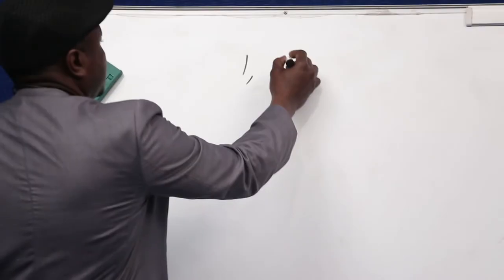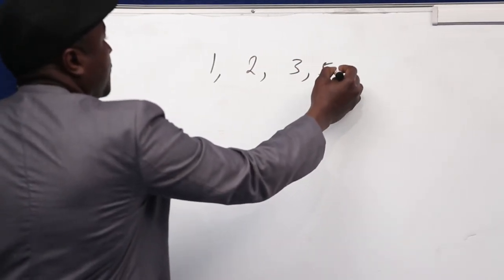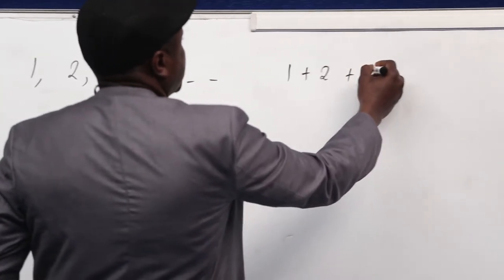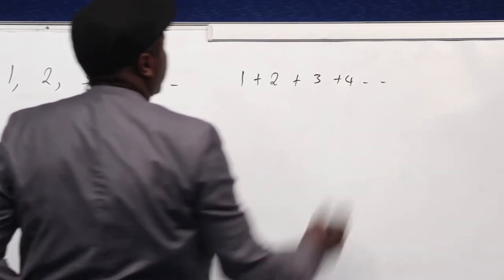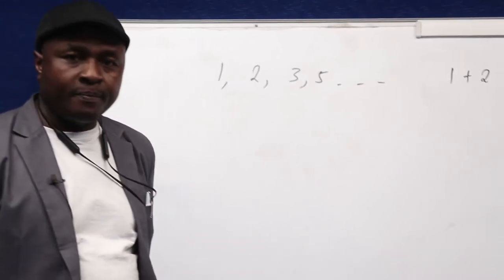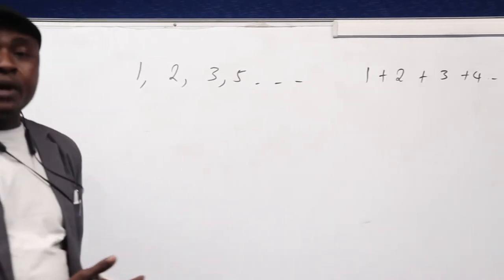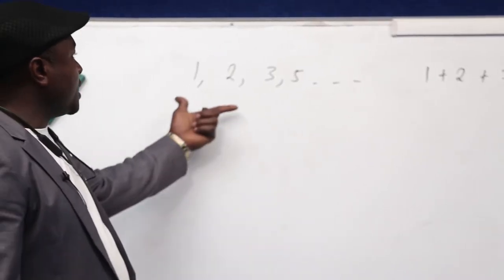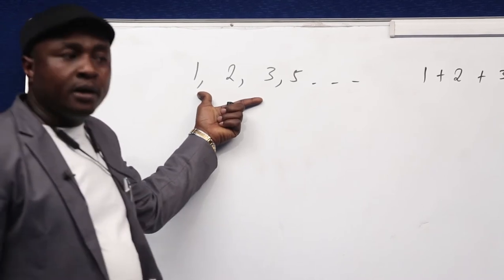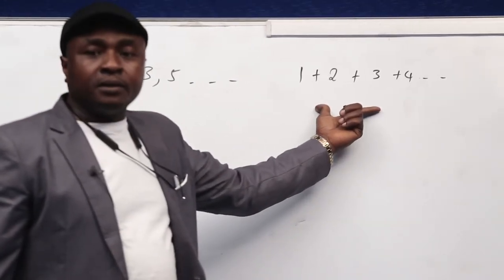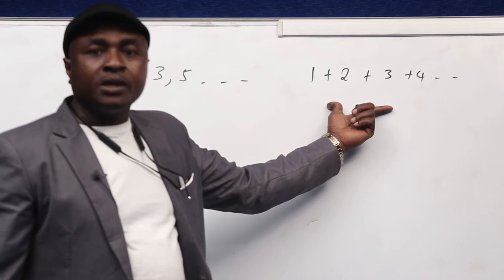For instance, consider the set of numbers 1, 2, 3, 4, 5, and so on, compared with 1 + 2 + 3 + 4, and so on. The basic difference between the two sets of numbers is that the first one is separated by commas, and the second one is separated by a plus sign — that is, addition. So, a set of numbers separated by commas is called a sequence. However, if the numbers are separated by addition, a plus sign, it is called a series.